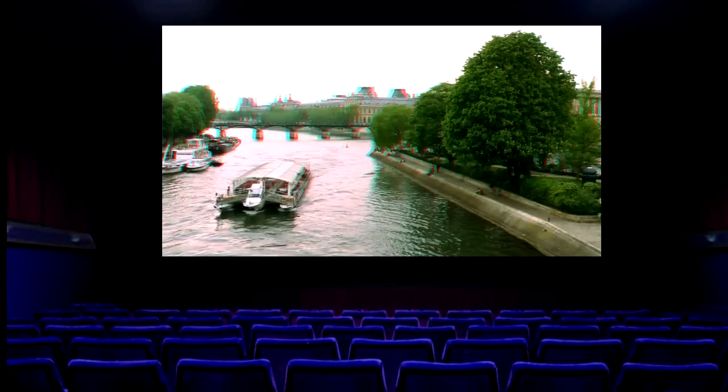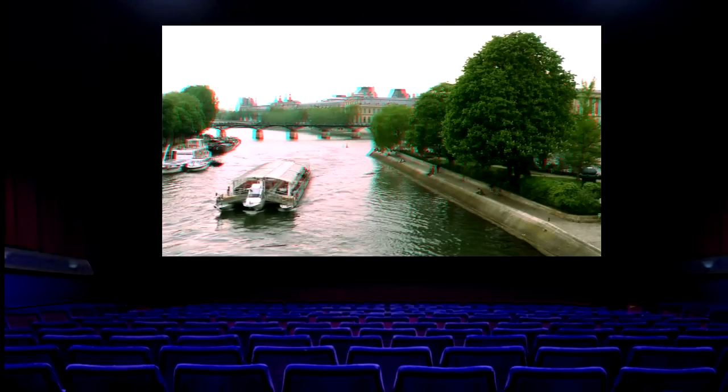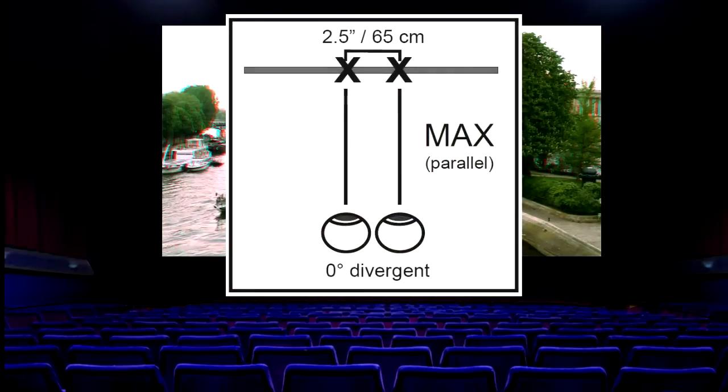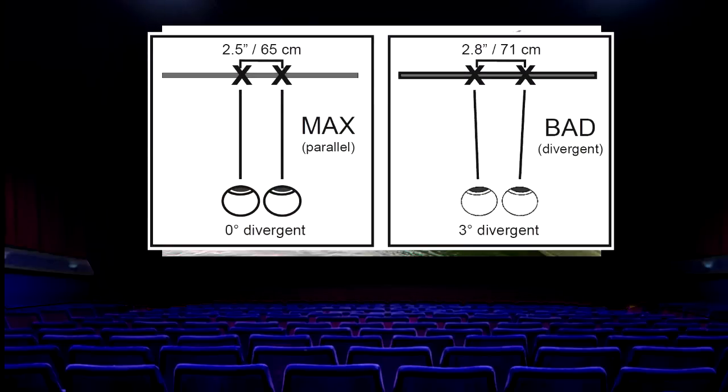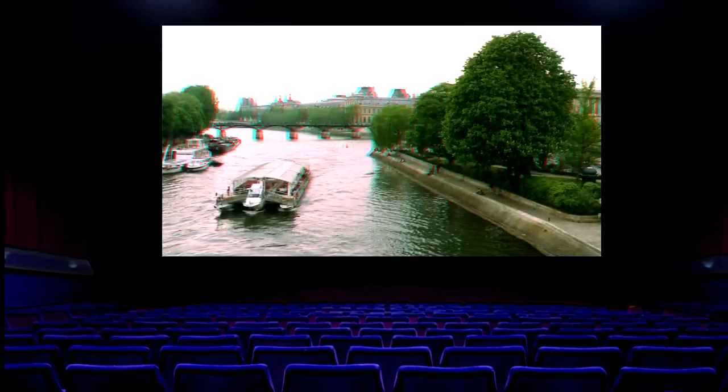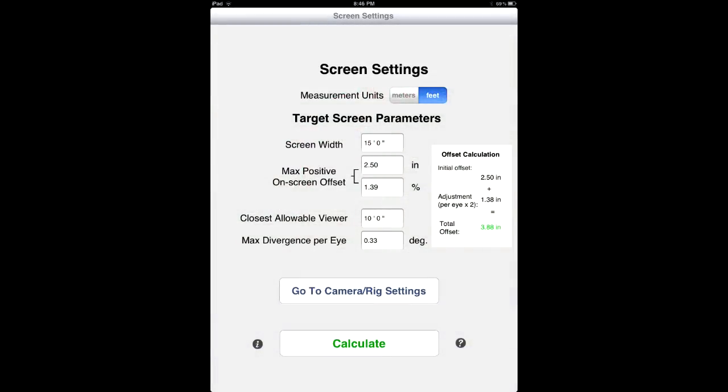The reason we need to do this, of course, is to avoid divergence, which is when the viewer's eyes would have to turn outward from parallel. Divergence is a very bad thing because it can give your viewers headaches and nausea and all kinds of things we want to avoid.